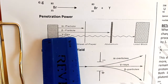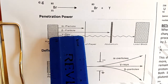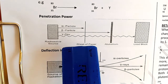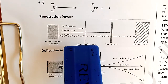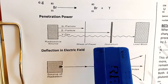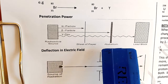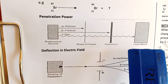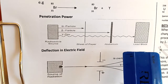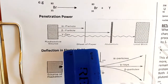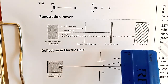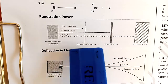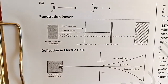Gamma rays have very high penetrating power — they penetrate through a piece of paper and through an aluminium foil, and are only stopped by lead blocks. This explains why radioactive substances are usually stored in lead blocks, because lead has the ability to stop all three types of radiation.